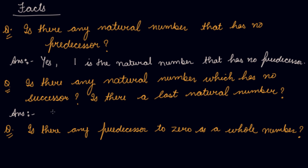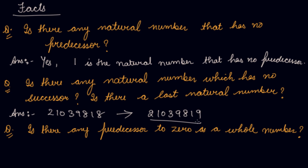If you take any natural number — let's take the natural number 210,398,18 — it has a successor which is 210,398,19. So, there is no natural number without a successor. To every natural number, there is a successor. Is there a last natural number? No, there is no last natural number as the natural numbers are till infinity.